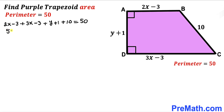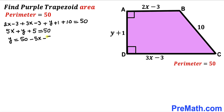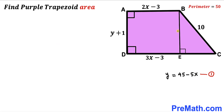Combining the like terms on the left-hand side gives us 5x plus y plus 5 equals 50. Moving 5x and 5 to the other side, we get y equals 50 minus 5x minus 5, which simplifies to y equals 45 minus 5x. I'll label this as equation number 1.